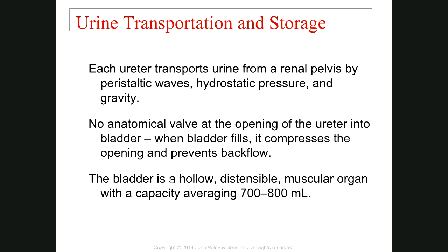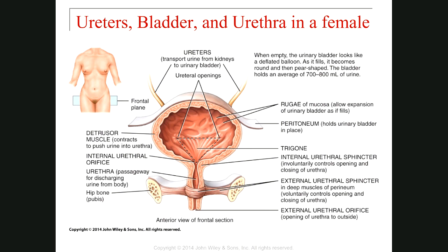The bladder is a hollow, distensible muscular organ, and the capacity of the bladder is about 700 to 800 milliliters. In this picture, you can see the bladder, the ureter, and the urethra in the female. The ureters come and pass through the wall of the bladder about one centimeter, then open in the posterior wall of the bladder.